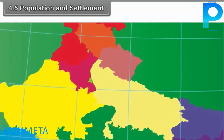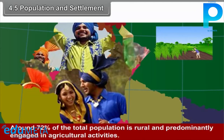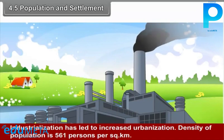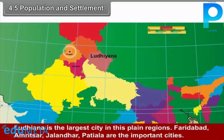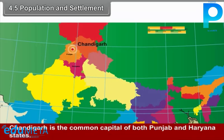4.5 Population and Settlement. According to the 2011 census, the total population of both states is 5.30 crores. Around 72% of the total population is rural and predominantly engaged in agricultural activities. Industrialization has led to increased urbanization. Density of population is 561 persons per square kilometer. Ludhiana is the largest city in this plain region. Faridabad, Amritsar, Jalandhar, and Patiala are the important cities. Chandigarh is the common capital of both Punjab and Haryana.